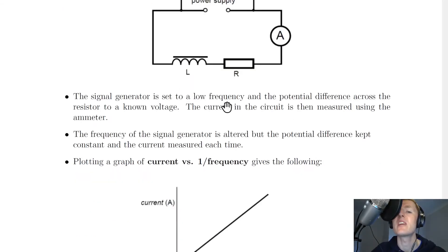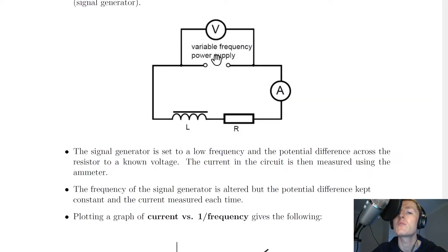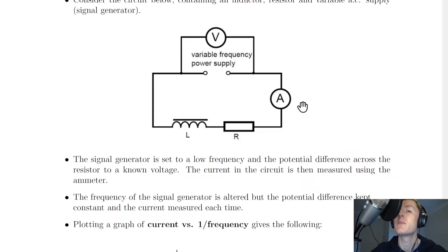The signal generator is set to a low frequency and the potential difference across the resistor to a known voltage. The current in the circuit is then measured using the ammeter. So all we're doing is for a set frequency value from the signal generator is writing down the current in the circuit. And this is just like the experiment we looked at for capacitors in AC circuits.